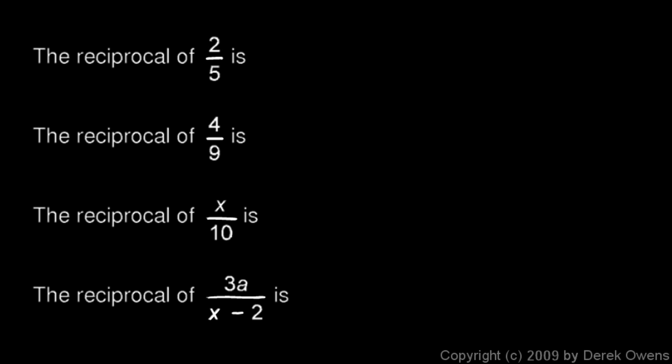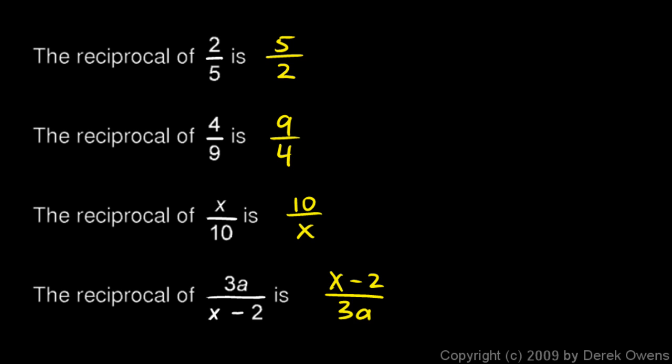Now we'll talk about reciprocals. First we'll answer the question: what is a reciprocal? We'll answer it by looking at these examples. The reciprocal of 2/5 is 5/2. The reciprocal of 4/9 is 9/4. The reciprocal of x/10 is 10/x. And the reciprocal of 3a over (x minus 2) is (x minus 2) over 3a. So the reciprocal of a fraction is simply that fraction flipped over — take the top, put it on the bottom; take the bottom, put it on the top.